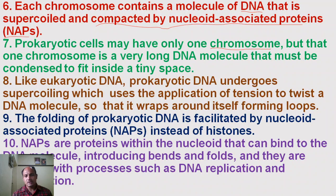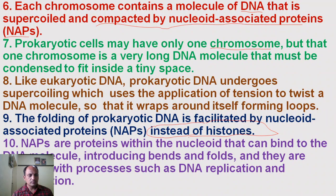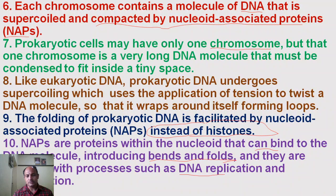The folding of prokaryotic DNA is facilitated by special proteins called nucleoid-associated proteins. Histone proteins, however, are absent in prokaryotic cells — these are present only in eukaryotic cells. The nucleoid-associated proteins bind to the DNA molecule, causing bending and folding of the DNA, and are involved in different processes such as DNA replication and transcription.